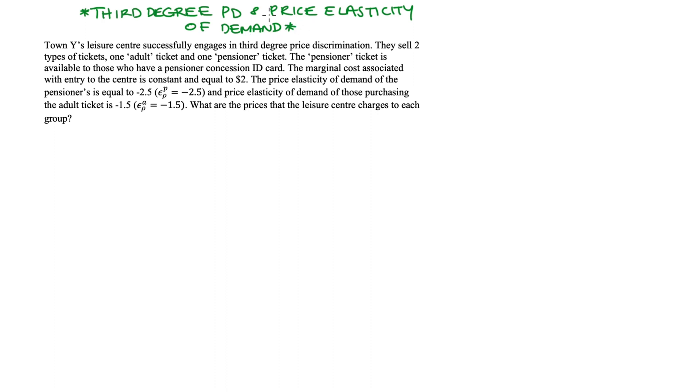So in the question we're told that Townwise Leisure Centre successfully engages in third degree price discrimination. They sell two types of tickets, one adult ticket and one pensioner ticket. The pensioner ticket is available to those who have a pensioner concession ID card. The marginal cost associated with entry to the centre is constant and equal to two.